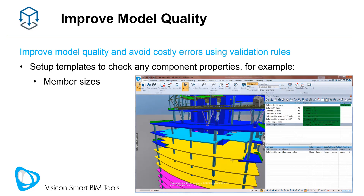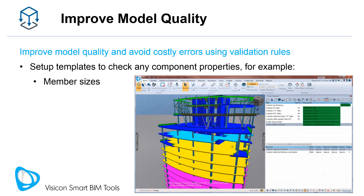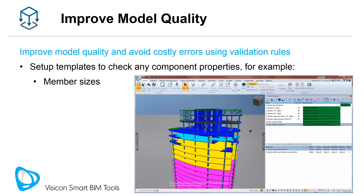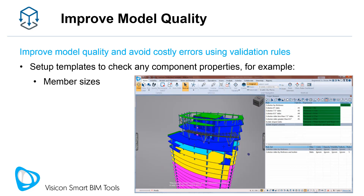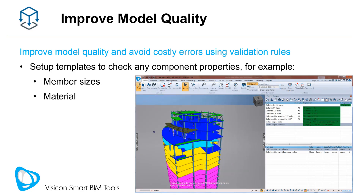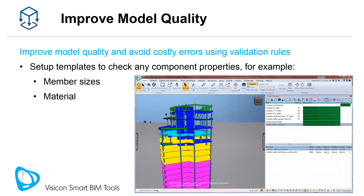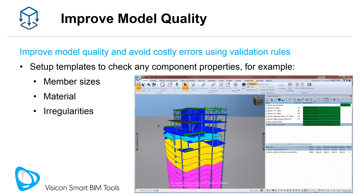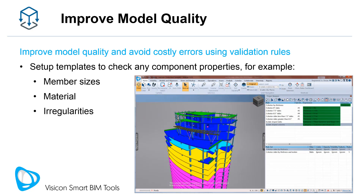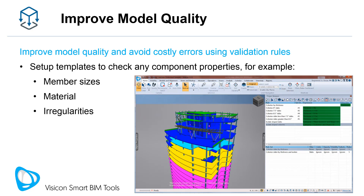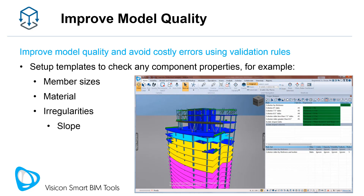Check for member size assignments — this can be for any property like slab thickness, flange width, etc. Check material definitions. Check for modeling irregularities like slope, ensuring components are not accidentally modeled at a slope. Check rotation. Ensure you have applied the correct loads.